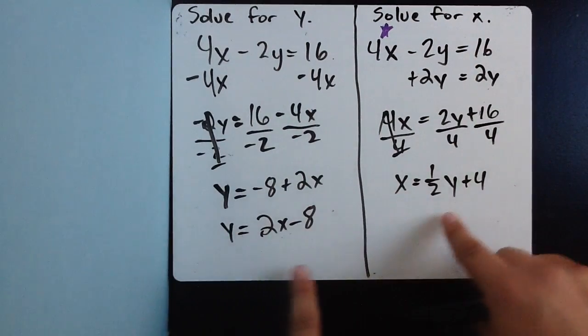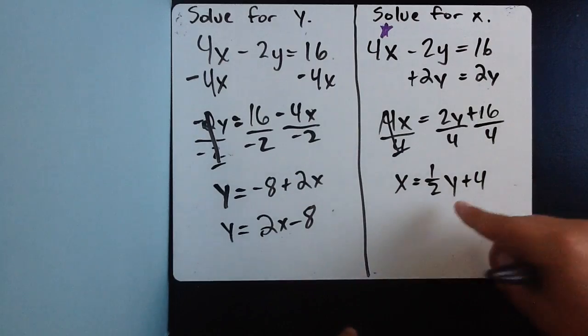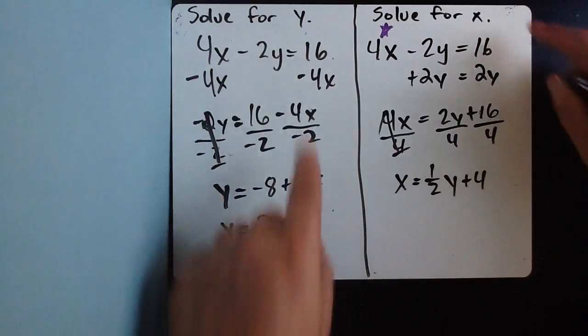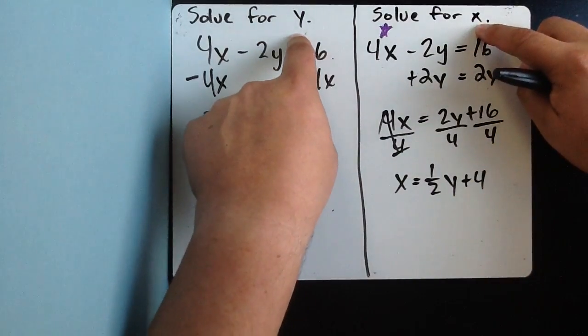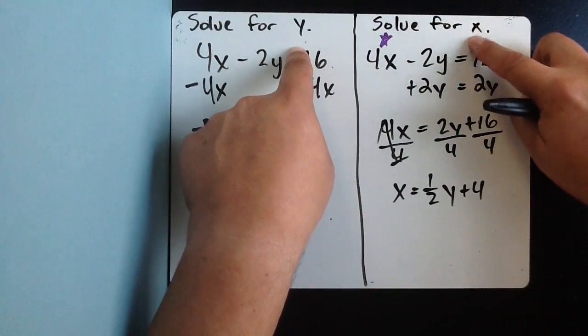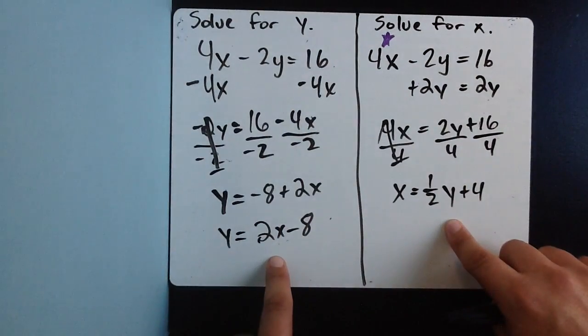where your variable that you're solving for is isolated. This is my answer. I'm done. I don't need to figure out what these values are. I'm not being asked to do that. I'm just asked to manipulate the equation. Remember that. I'm just being asked to manipulate the equation. Change its appearance.